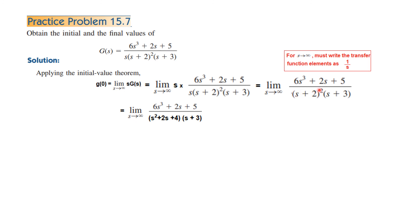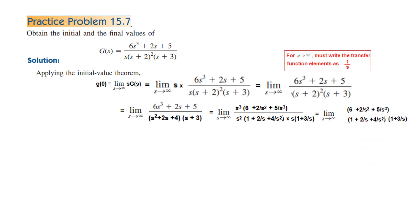To convert to 1/S form, we open and simplify the numerator. Taking S squared common from one part and S common from another, the total common in the denominator is S cubed. Taking S cubed common from the numerator as well, they cancel. Applying the limit: everything with S becomes 0, leaving 6 divided by 1, so the initial value is 6.